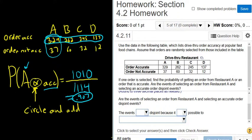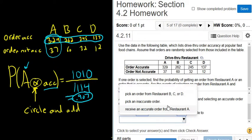Well, you can order from restaurant A and get an accurate order. In fact, there's 329 ways to do that. You can get accurate orders from restaurant A. So I would say the events are not disjoint because it is possible to receive an accurate order from restaurant A.